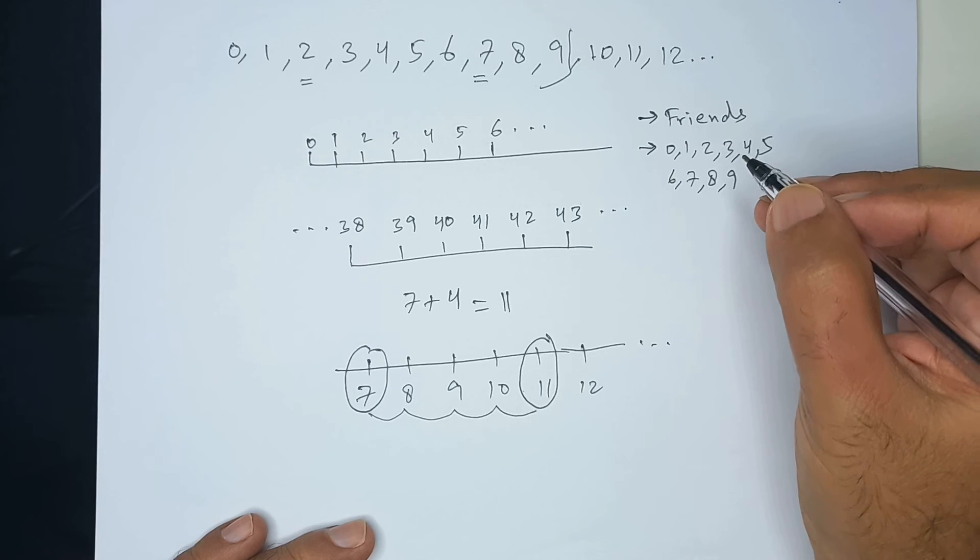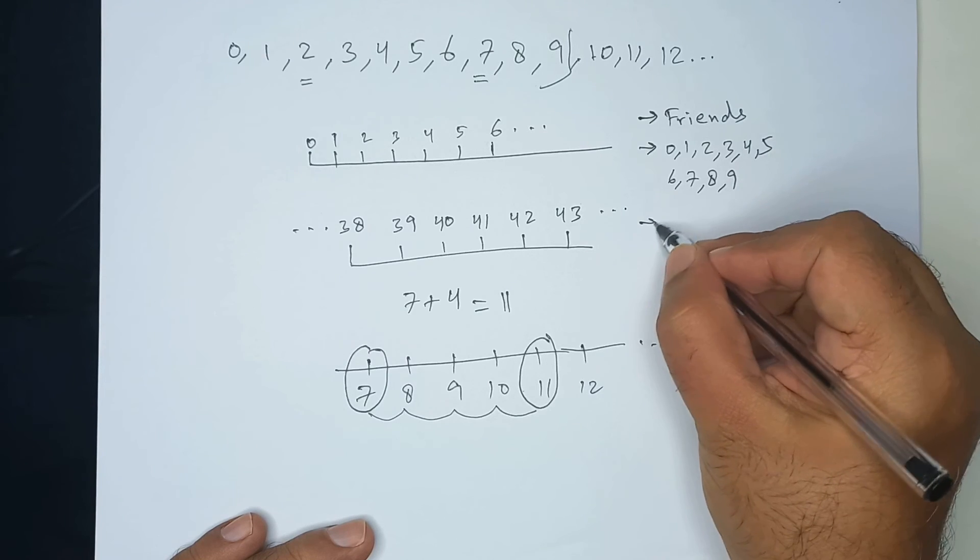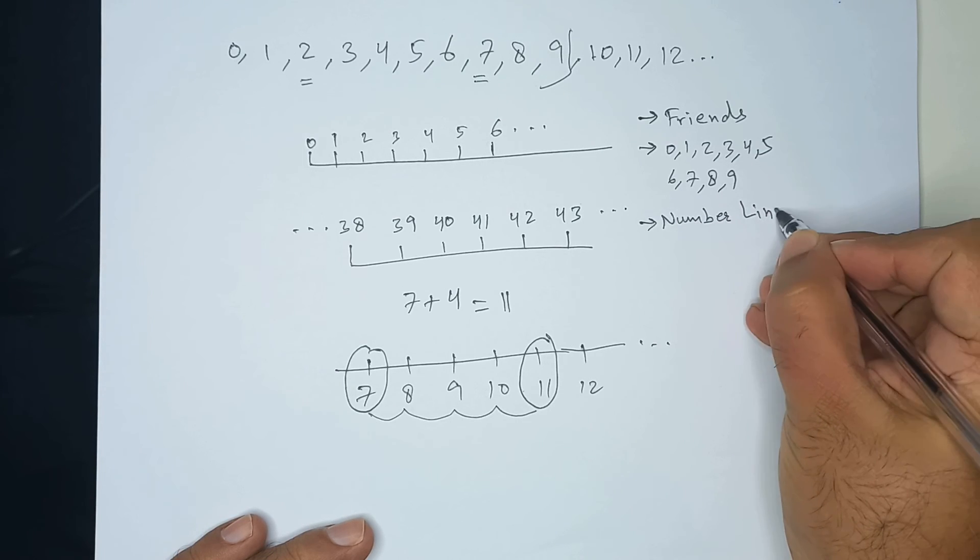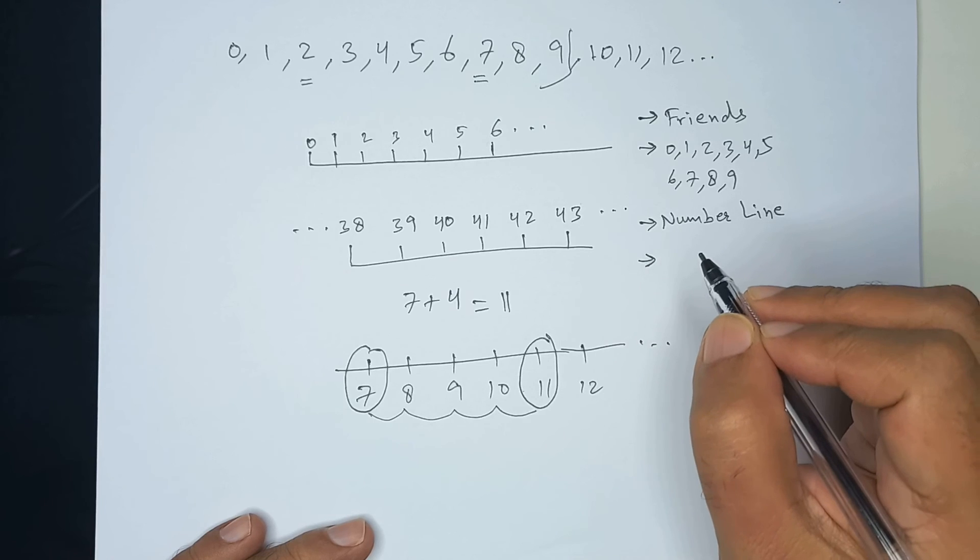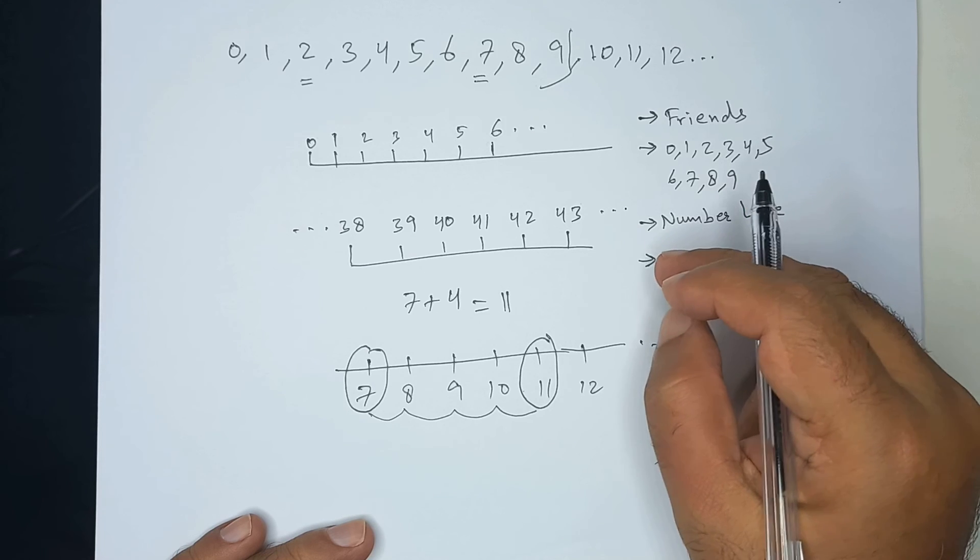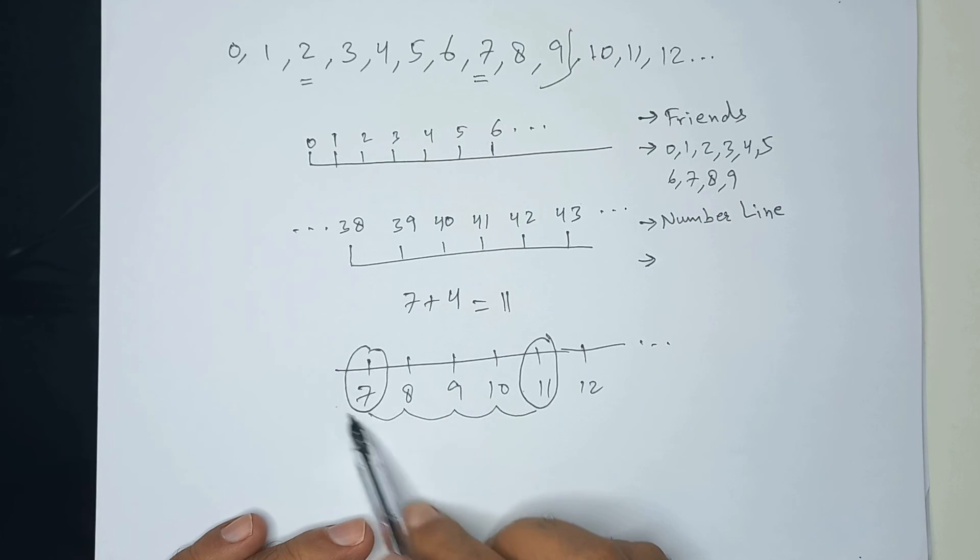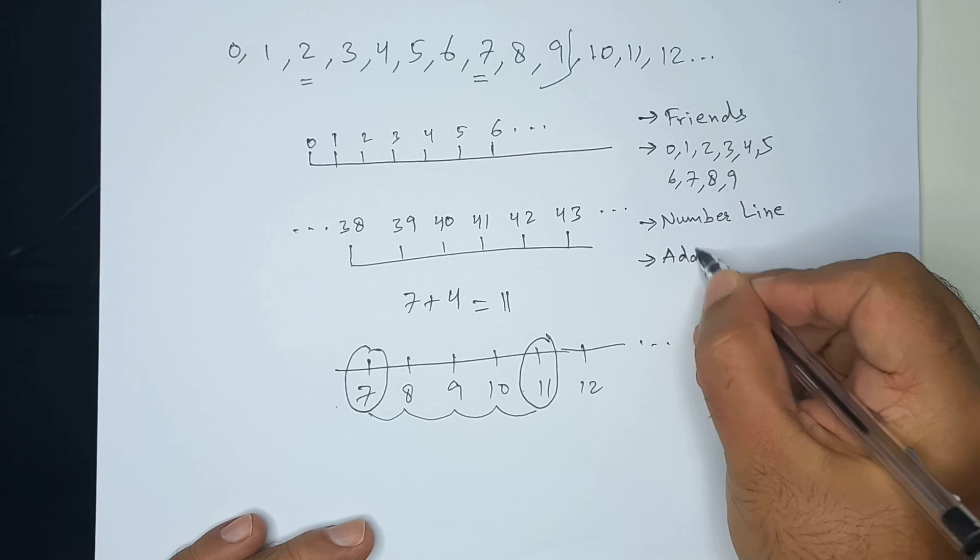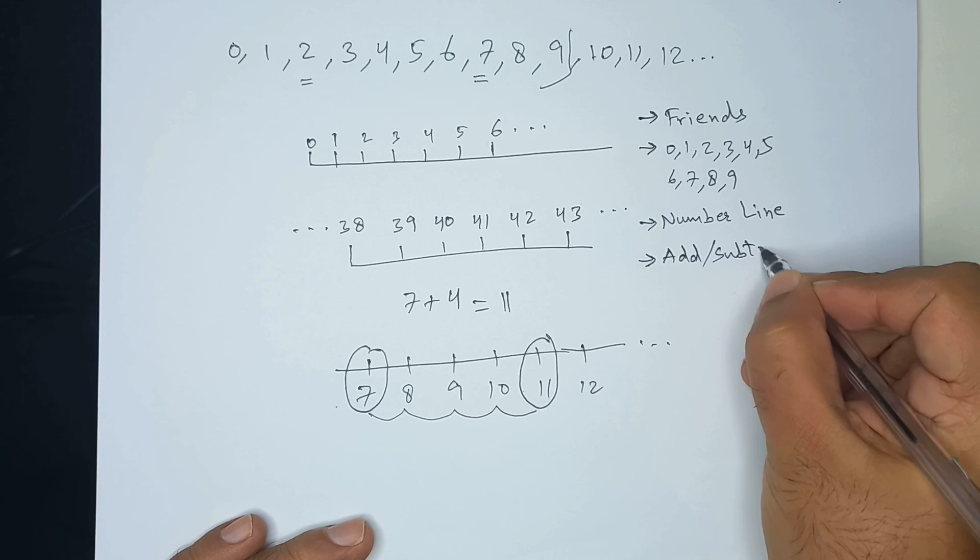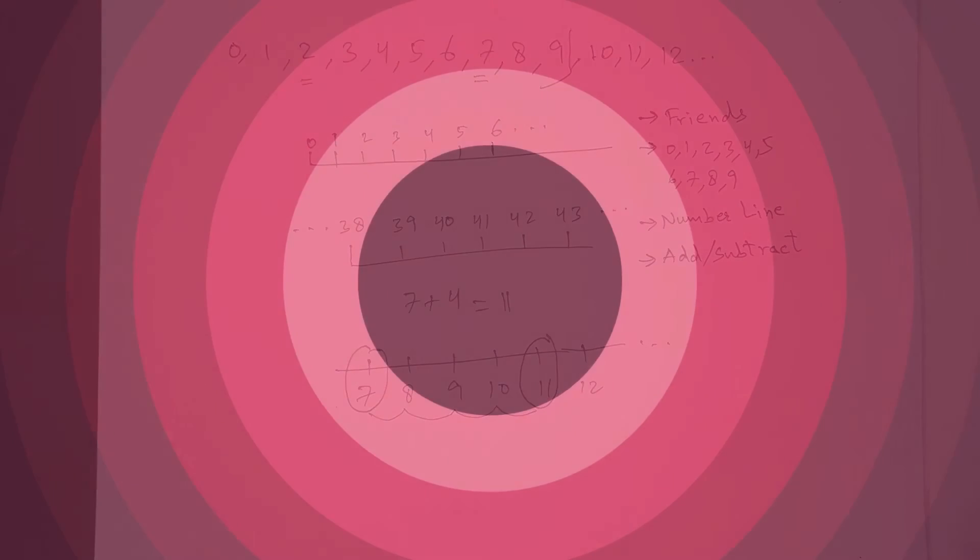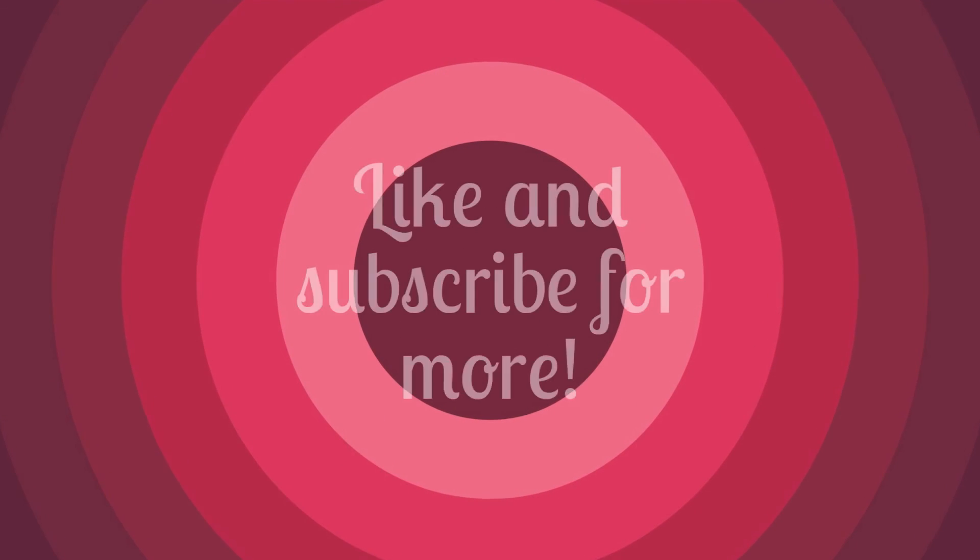Then there is a useful tool to imagine numbers, it's called the number line. And the fourth main point is numbers can be added by counting on from the first number. Like here, we start from 7 and we reach at 11. So it's easy to add or subtract numbers like this.